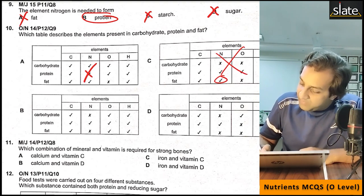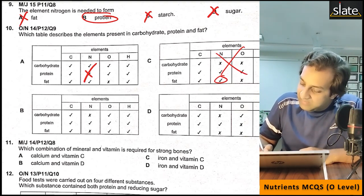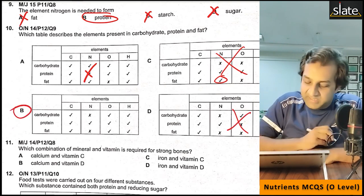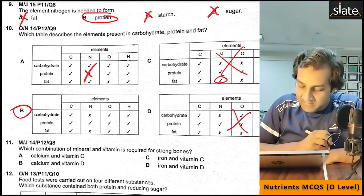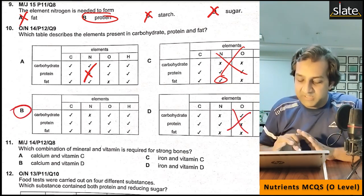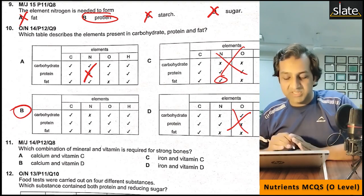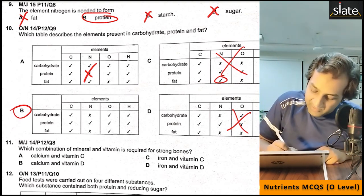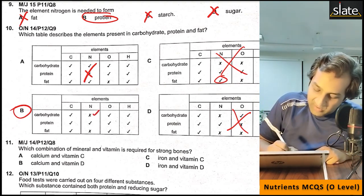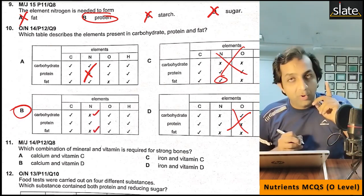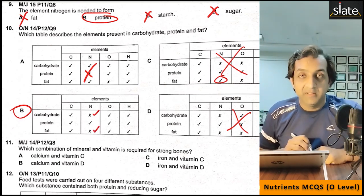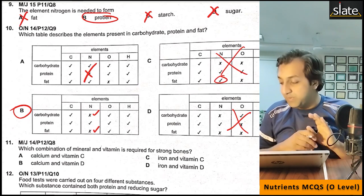Nitrogen is not in saturated fat or oxygen, so those options are wrong. Therefore we have option B, which means carbon, oxygen, and hydrogen are found in carbohydrates but not uniquely — nitrogen distinguishes proteins.